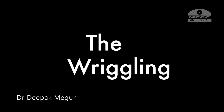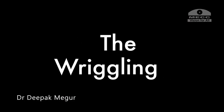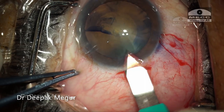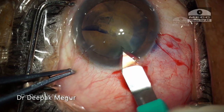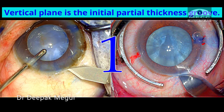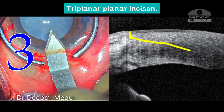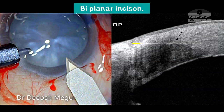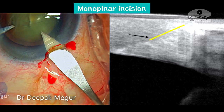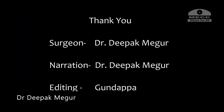Before I conclude, I'd like to mention another technique used to make an incision which I call the wriggling technique. I've seen many colleagues use this technique, but personally I've not been a great fan of it. This was a brief summary on how to create a triplanar corneal incision and understand the biplanar and other variants. Thank you so much for watching and I hope you found this helpful.